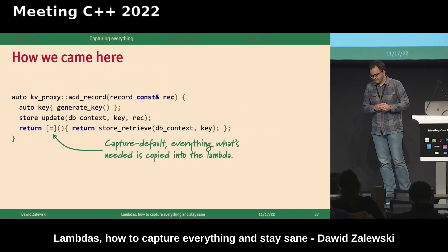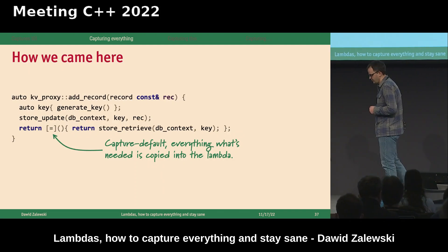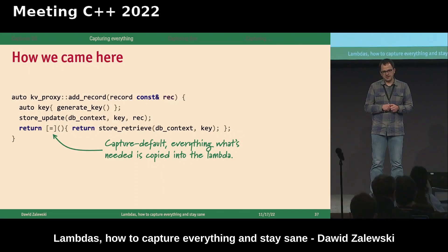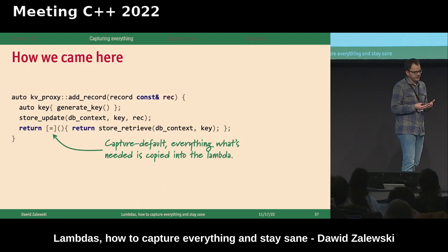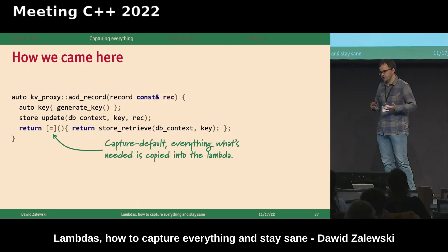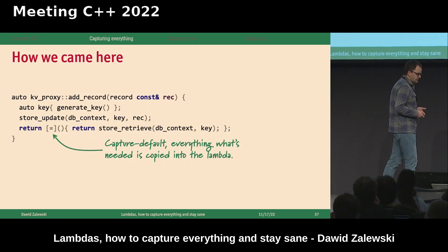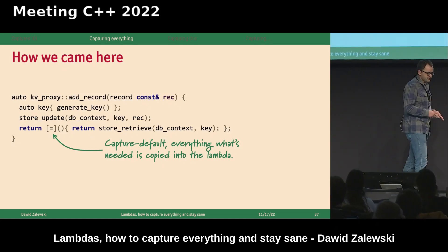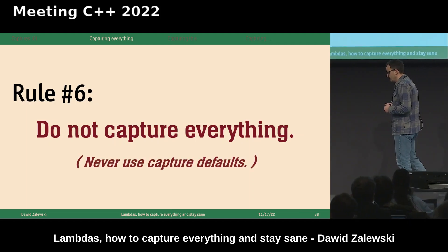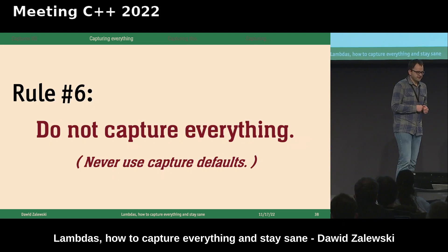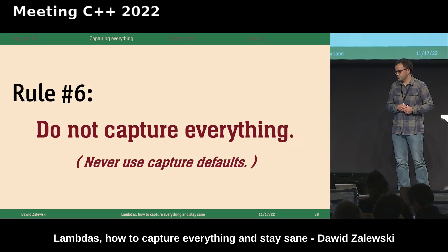How did we get into this situation? We used a capture default, which gives you the illusion that everything will go right because you are safe. But this is only an illusion. Contrary to what the title of this talk tells you: never capture everything. Do not use capture defaults — they are tricky, they hide complexity and they hide traps from you, unless you are absolutely sure you know what you are doing.